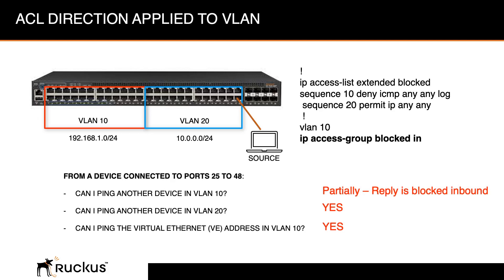Same access group, same inbound on VLAN 10 — nothing has changed. Now the source device is in VLAN 20. Can I ping another device in VLAN 10? The answer is partially. This ACL is applied inbound to the interfaces in VLAN 10, so when I ping from VLAN 20 to VLAN 10, that traffic goes just fine. However, the reply — which is also an ICMP packet — is inbound into VLAN 10 and will get dropped. The reply is blocked, but the actual ping itself reaches its destination in VLAN 10.